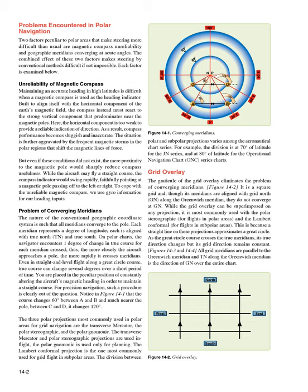Grid overlay. The graticule of the grid overlay eliminates the problem of converging meridians. Figure 14-2: it is a square grid and, though its meridians are aligned with grid north (GN) along the Greenwich meridian, they do not converge at GN. While the grid overlay can be superimposed on any projection, it is most commonly used with the polar stereographic for flights in polar areas, and the Lambert conformal for flights in subpolar areas. This is because a straight line on these projections approximates a great circle.